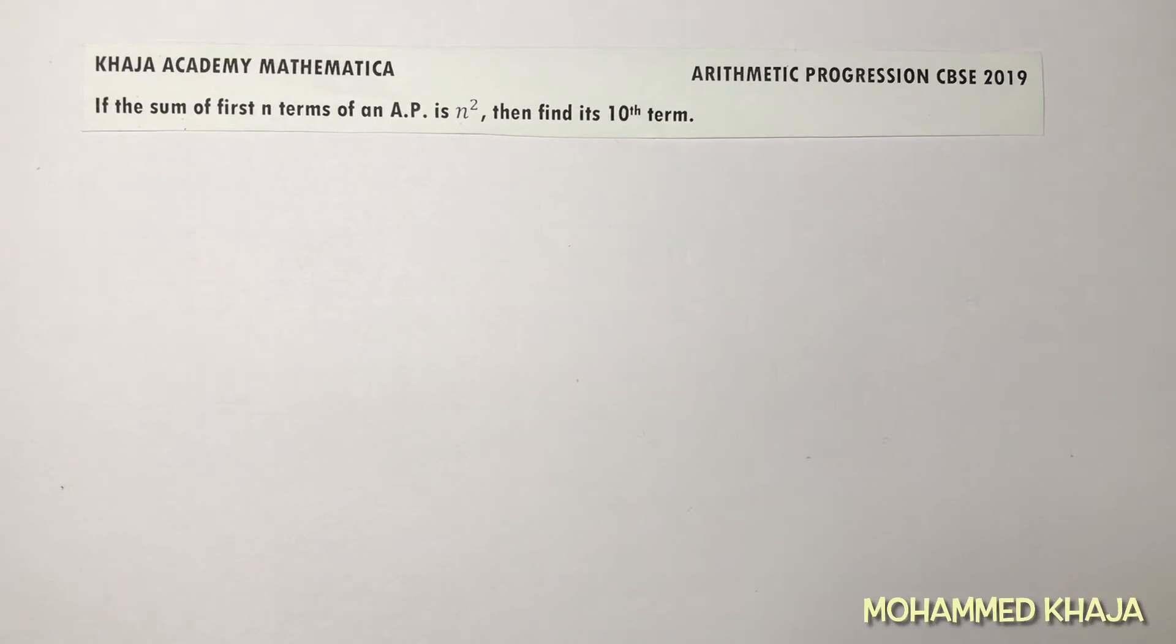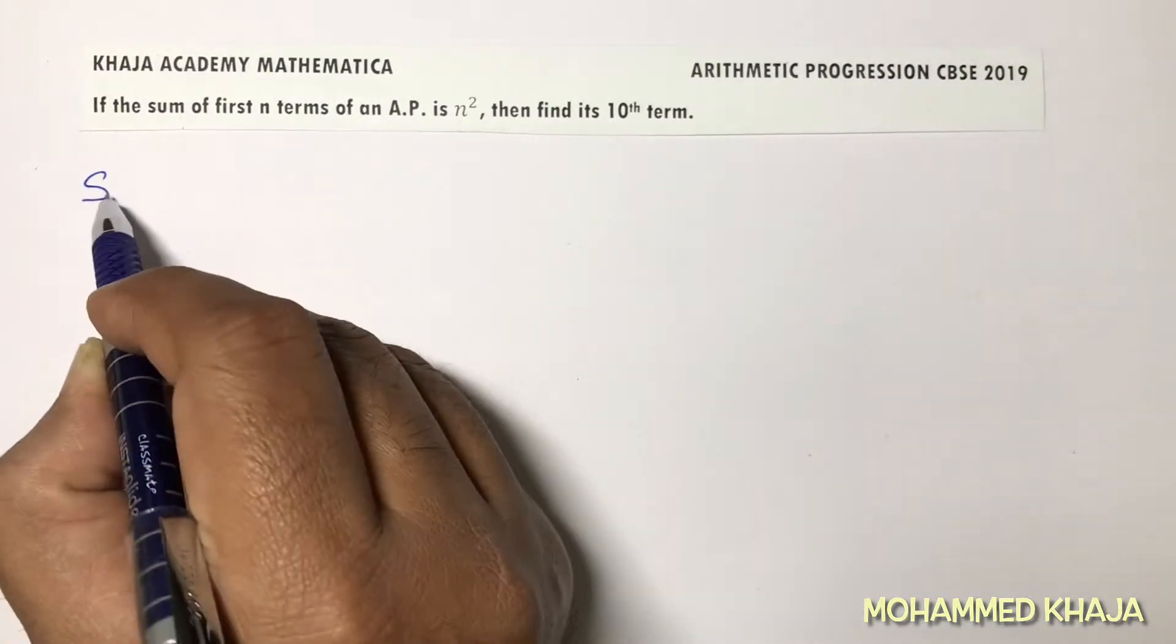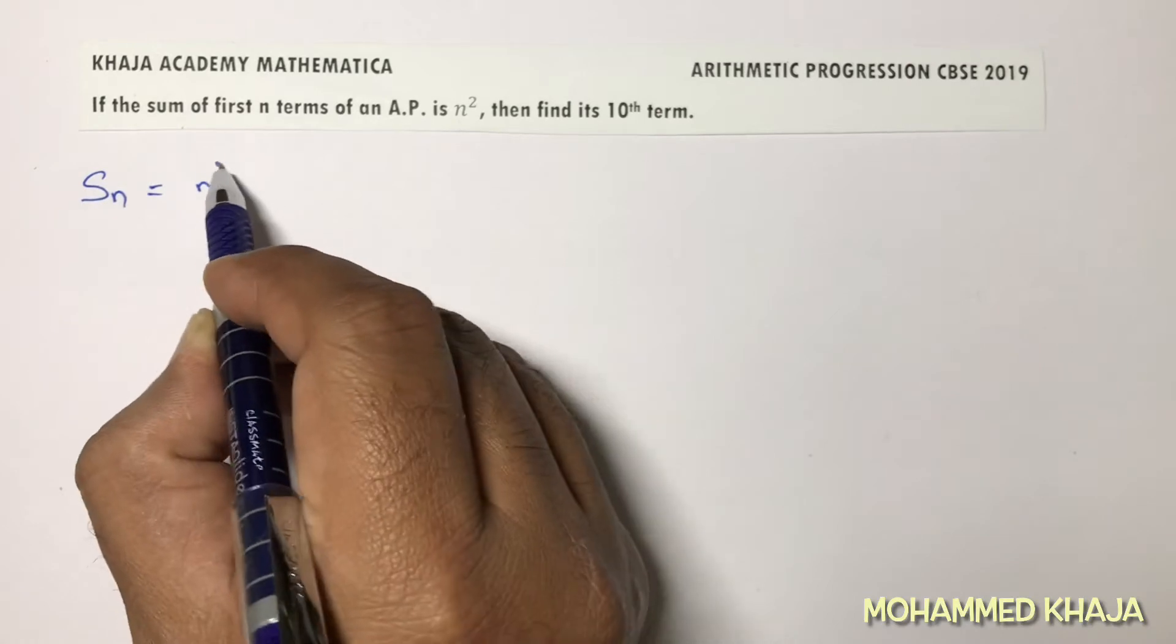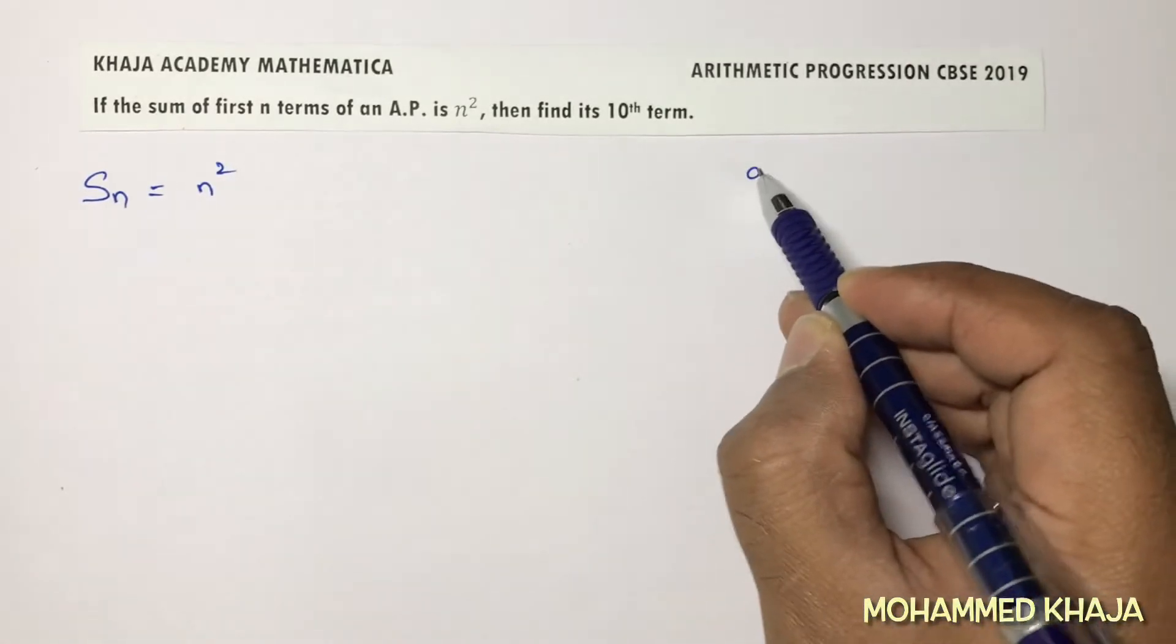If the sum of first n terms of an AP is n square, then find its 10th term. So here, sum of n terms of an AP is n square. We need to find the 10th term.